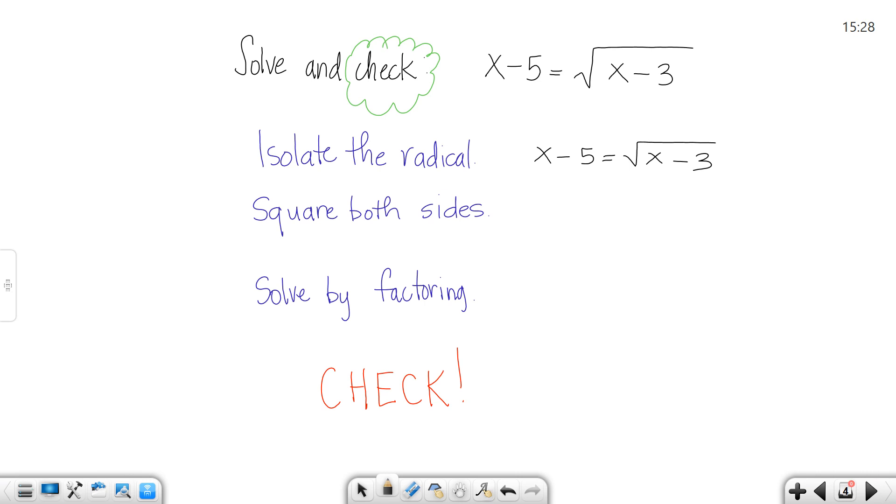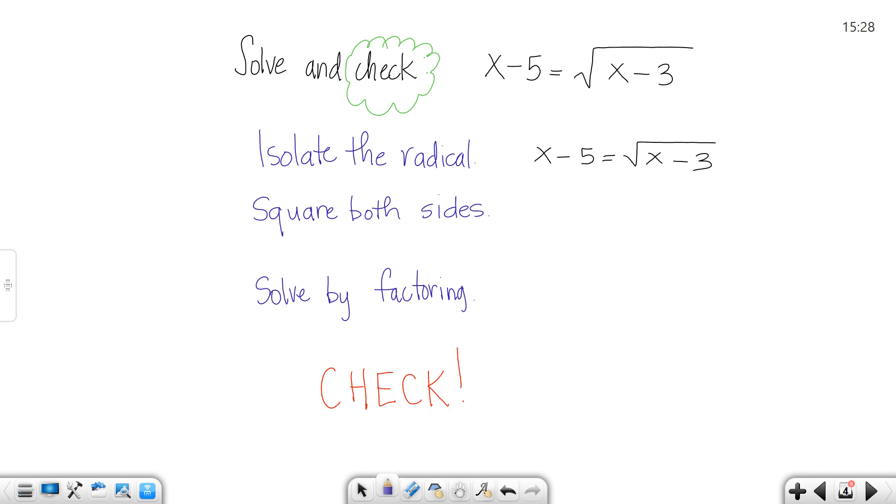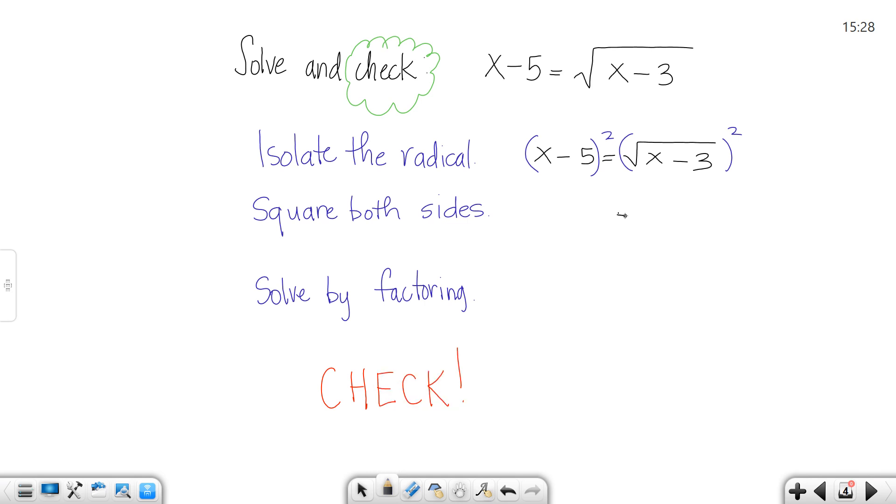The next thing you want to do, once you isolate the radical and get the radical on the side by itself, is you want to square both sides. When you square the radical, the radical goes away, so that would just leave you with an x minus 3. The square root and the square cancel one another out.